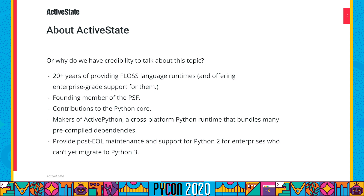We make ActivePython, which is a cross-platform Python runtime that bundles many of the dependencies that enterprises need for running their software. We have that runtime available for the big three platforms — Mac, Linux, Windows — as well as Big Iron platforms and other platforms that enterprises need.